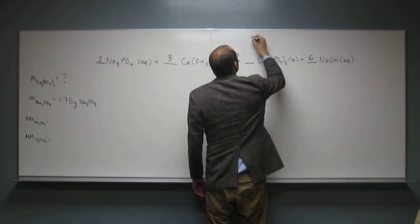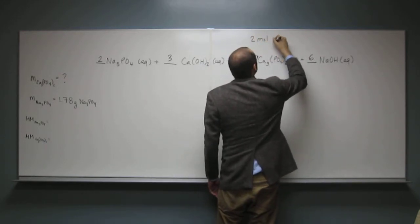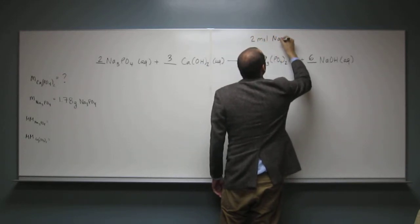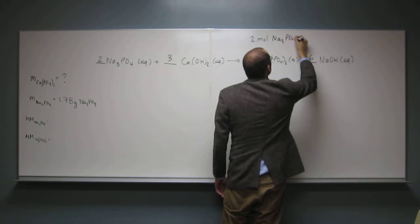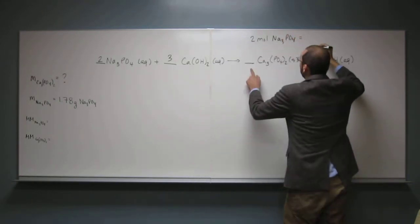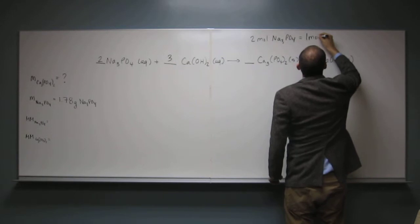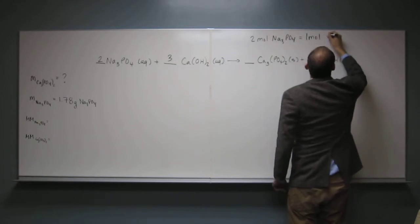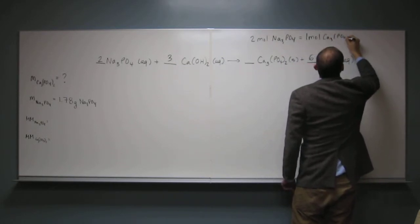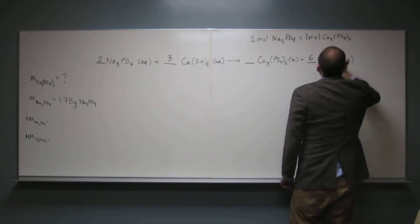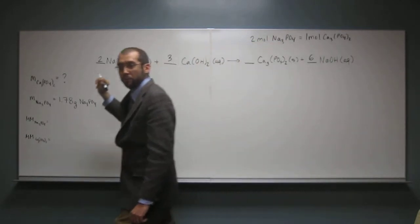Let's write that down: for every two moles of Na₃PO₄, we have one mole of Ca₃(PO₄)₂.